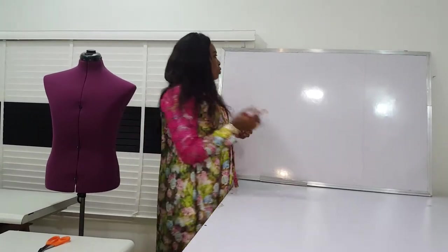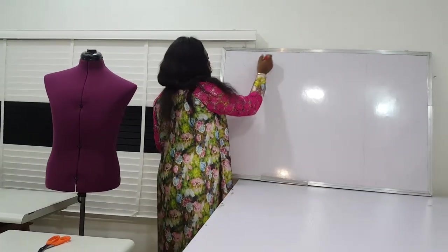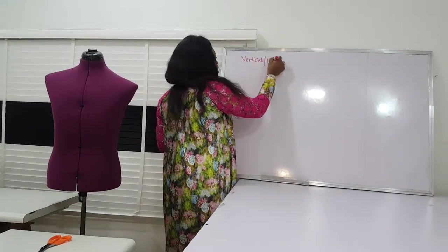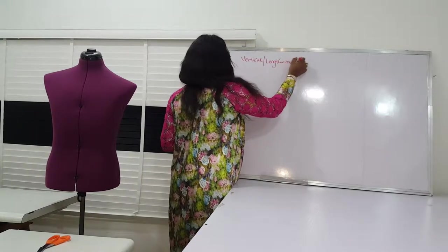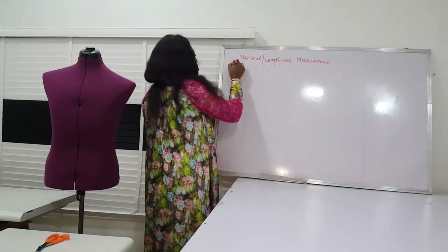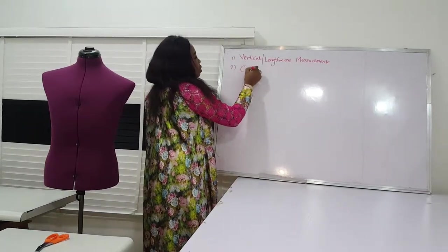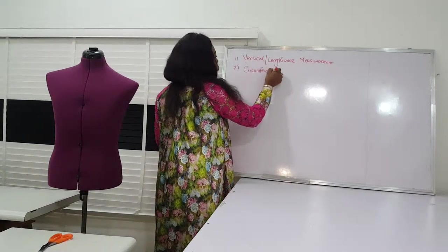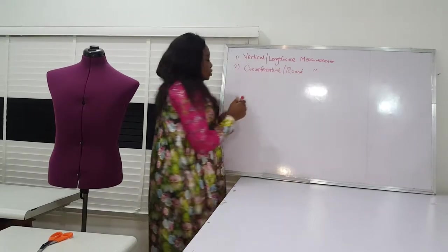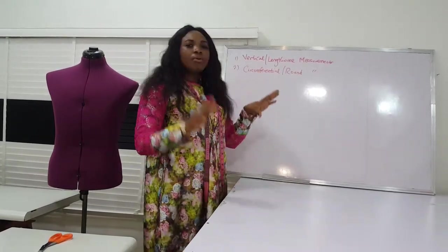In our class today we are going to see how to take accurate measurements. When you take accurate measurements, you have built the foundation for a perfect garment. When it comes to measurement, we have two types: we have the vertical or the lengthwise measurement, and the second is the circumferential or the round measurement. These are the two measurements that we need for our garments.